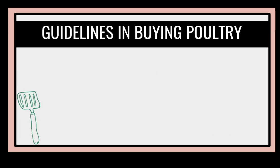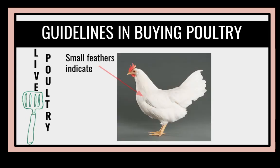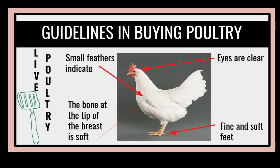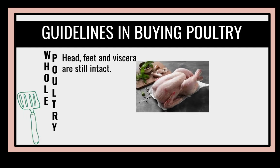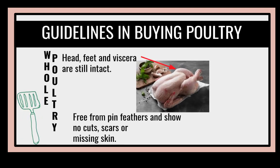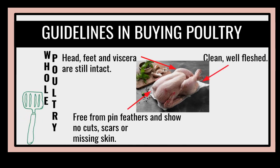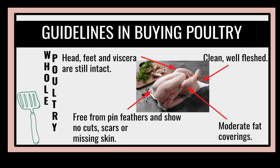If you're planning to buy poultry, then you must be guided with the following. For live poultry: they should have small feathers, the eyes should be clear, they have fine and soft feet, and the bone at the tip of the breast is soft. For whole poultry: the head, feet, and viscera are still intact, free from pin feathers and show no cuts, scores, or missing skin. They are clean, well-fleshed, and have moderate fat coverings. They shall be refrigerated for two to four days only.